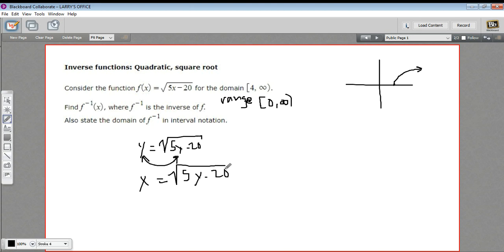Well, y is under a square root sign, so I'm going to square both sides. So I get x squared over here, and over here the squaring just undoes the square root, so I get 5y minus 20.